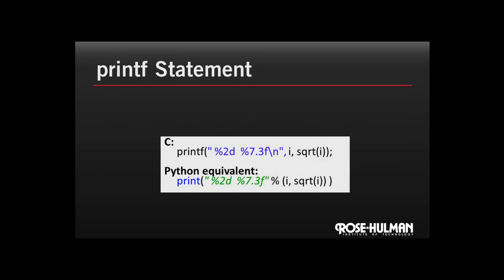So once we have strings, now we can talk about the printf statement in a little more detail. This slide shows an example in C and then the equivalent Python example. All this code is doing is printing out an integer using two characters for that, and then printing out a floating point number afterwards. In C, the printf function takes a format string as the first argument.